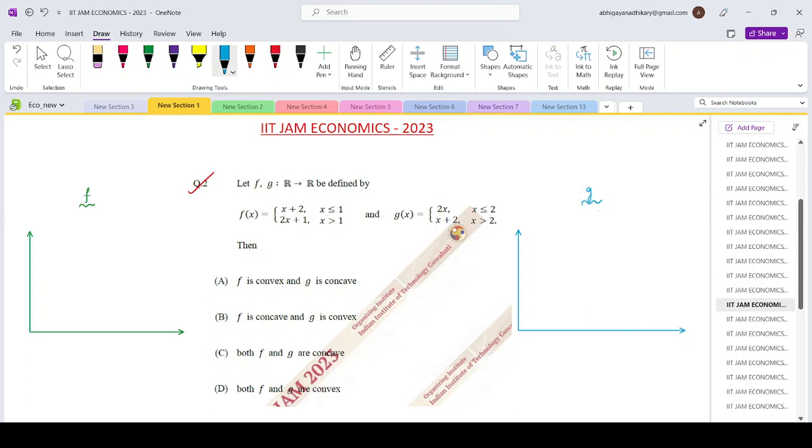Both the functions are linear. Function F has a change in its functional structure at point x equals 1 and function G has a functional change at point x equals 2.